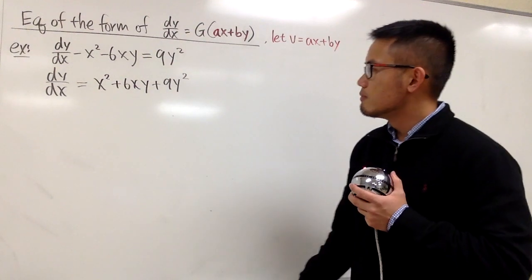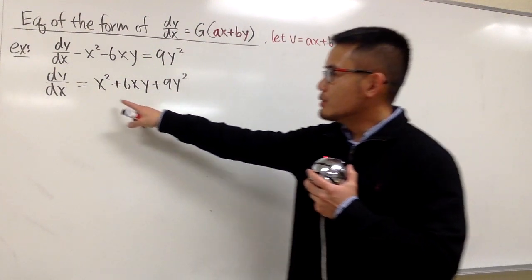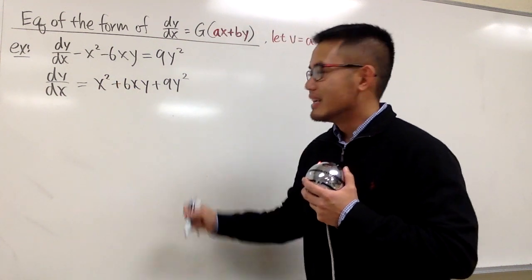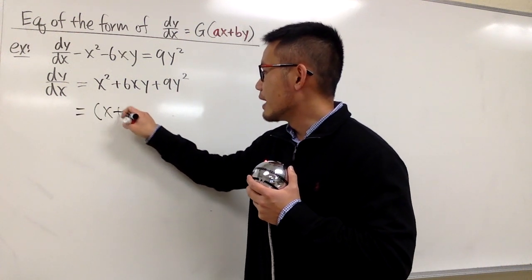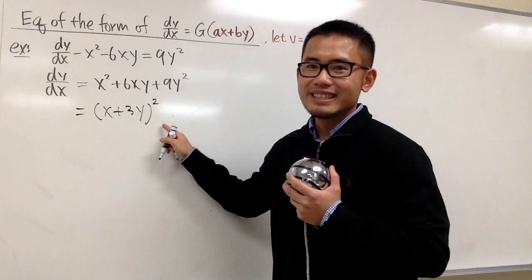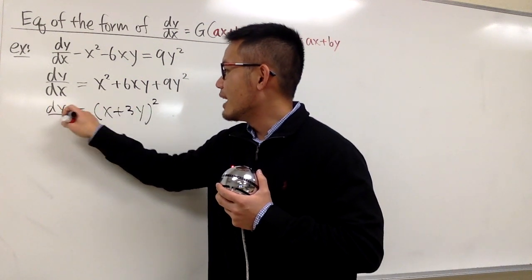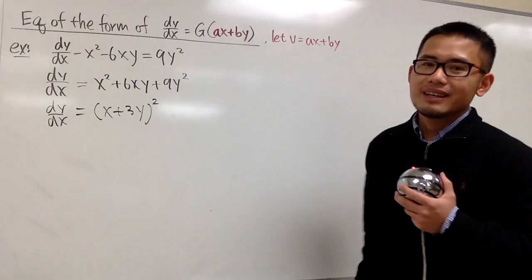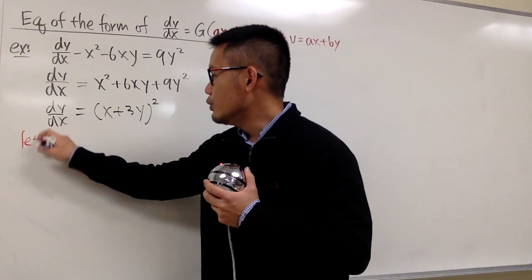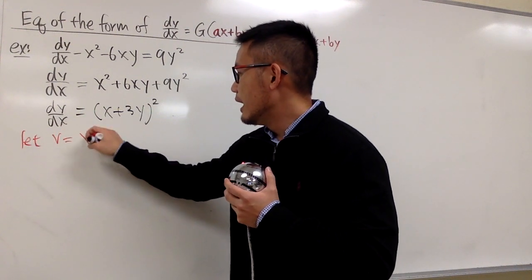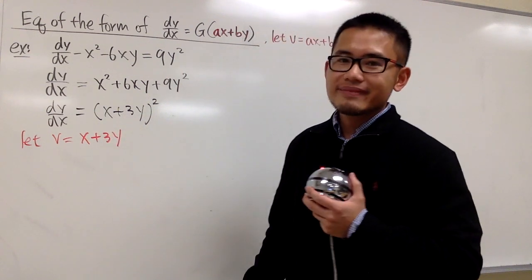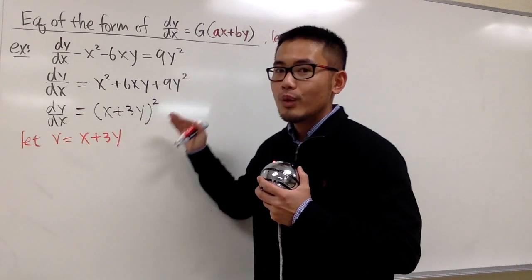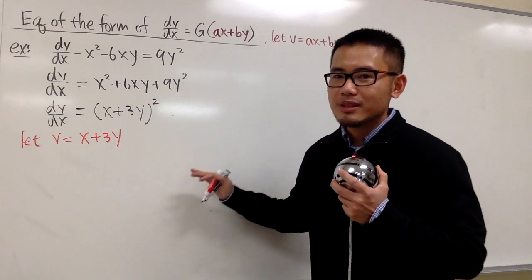Notice we have x² + 6xy + 9y². We can factor this — it is the same as (x + 3y)², and we still have dy/dx on the left-hand side. Now you can see that (x + 3y) is the input, so we are going to let our new variable v = x + 3y. We have to change this differential equation from terms of x and y into terms of x and v.